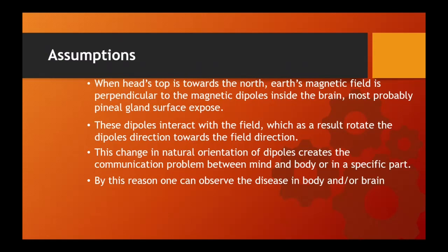In this study I have made some assumptions to find the answer to the cultural question of why one must avoid head towards north during sleep. First assumption: when the head's top is towards the north, Earth's magnetic field is perpendicular to the magnetic dipoles inside the brain — most probably the pineal gland surface, which is more exposed and responsible for this activity. Second assumption: these dipoles interact with the field, which as a result rotates the dipoles' direction towards the Earth's field direction. Third assumption: the change in natural orientation of dipoles creates a communication problem between mind and body, disturbing neuronal signals and potentially causing diseases.